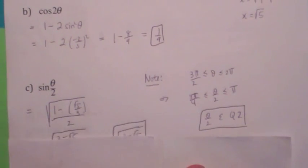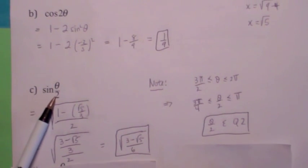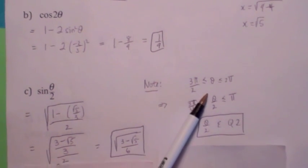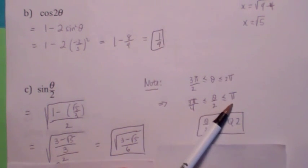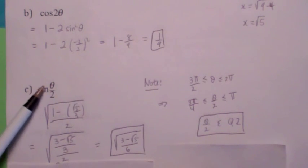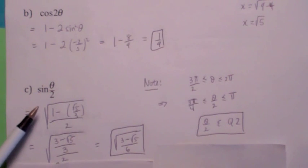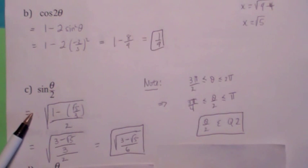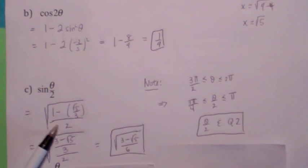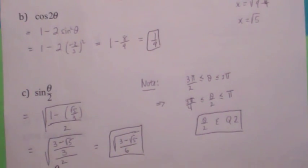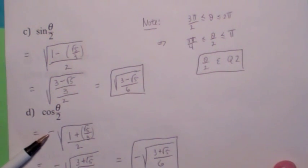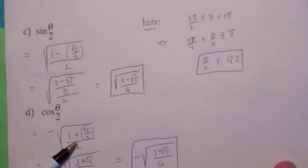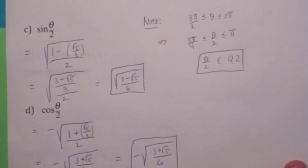Here's the hard part: we want to find the sine of half the angle. This is where you have to determine which square root to use. If theta is between 3 pi over 2 and 2 pi, dividing everything by 2 gives theta over 2 between 3 pi over 4 and pi — which means you're in quadrant 2. In quadrant 2 the sine is positive, so you use the positive square root. The sine of theta over 2 equals the positive square root of 1 minus cosine theta over 2, which simplifies to the square root of 3 minus root 5 over 6. For cosine of half the angle, since the angle is in quadrant 2, you need a negative: negative the square root of 1 plus cosine theta over 2, which simplifies to negative the square root of 3 plus root 5 over 6.